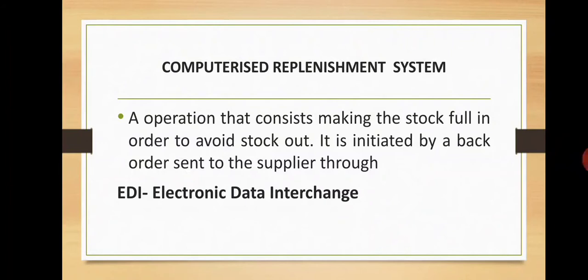The technology implemented in CRS is EDI — Electronic Data Interchange. To explain how it works: say for example you have an inventory of 100 tons in your warehouse. After implementing the technology of EDI, you will have to set an order limit — that is, the level at which you will order new inventory from your supplier — in your software.